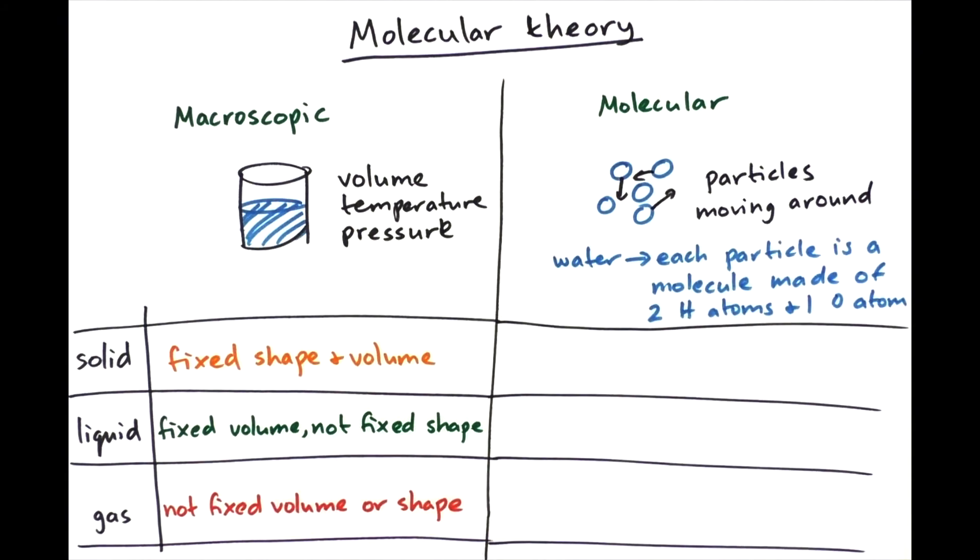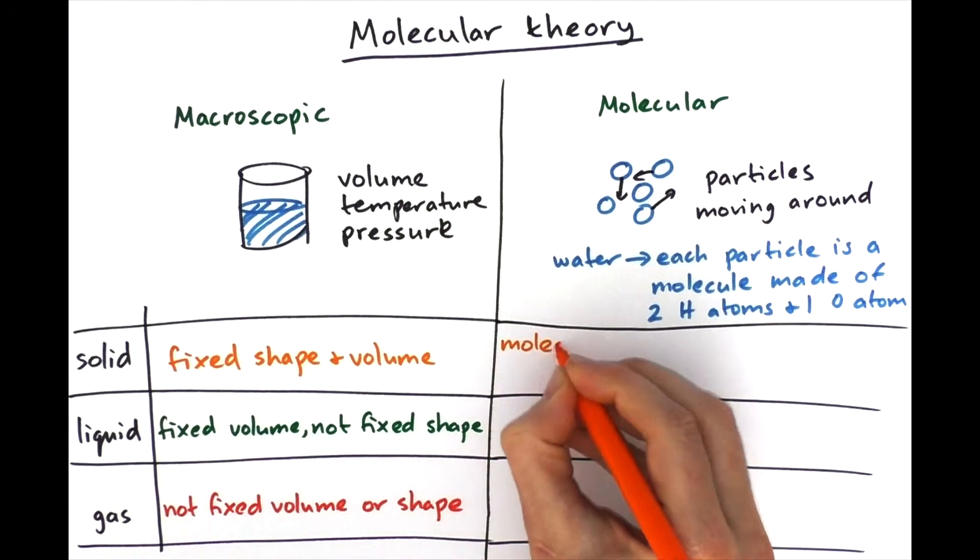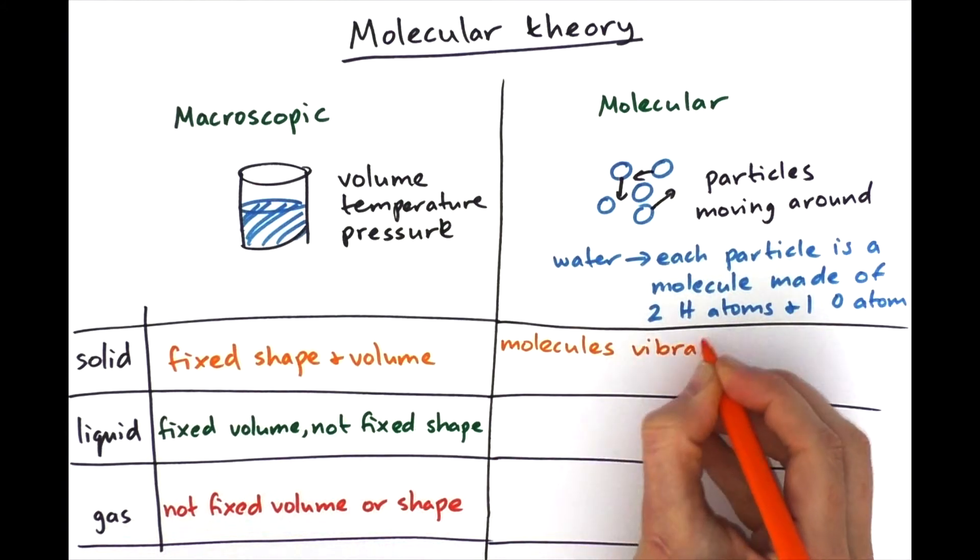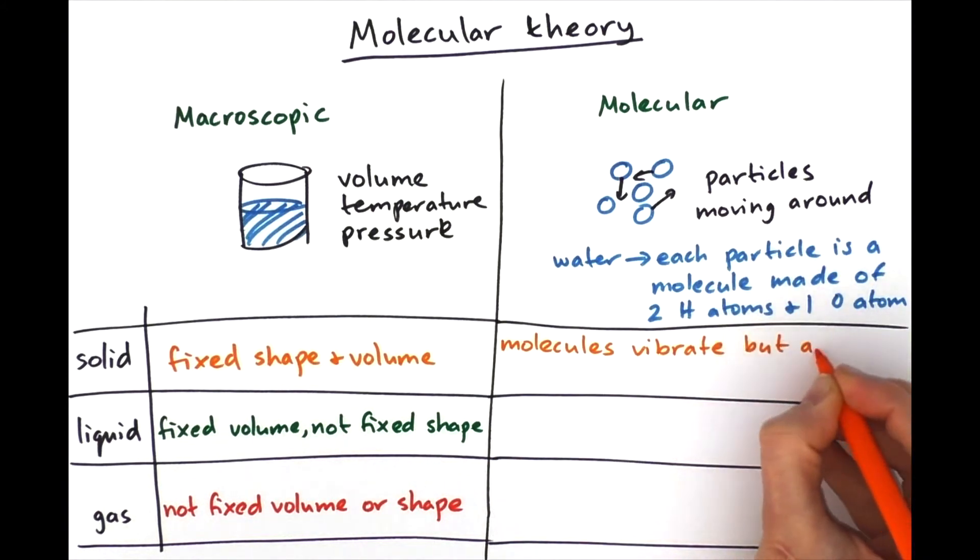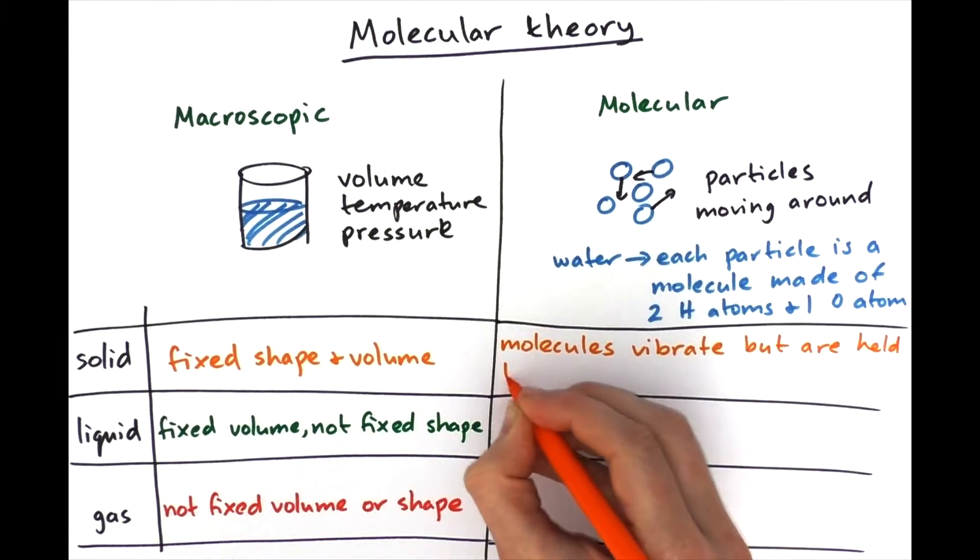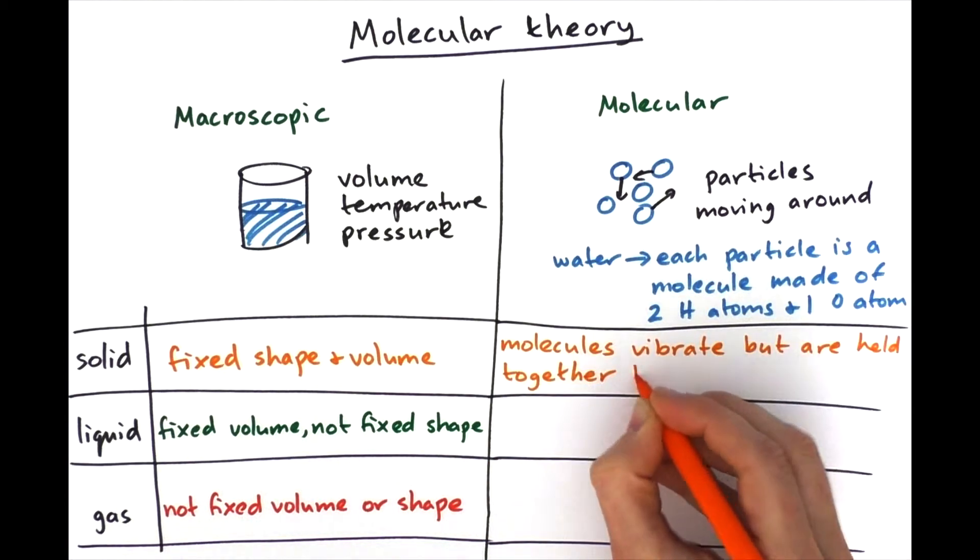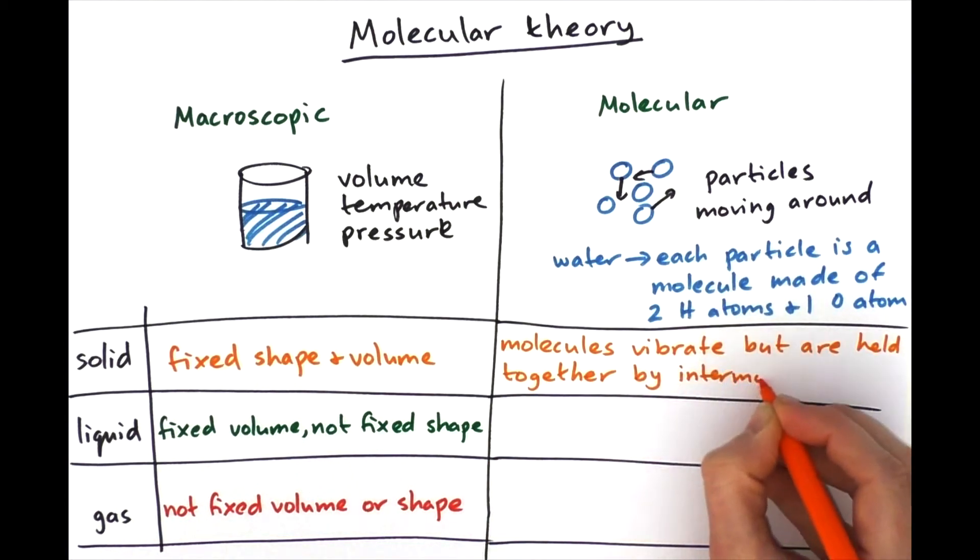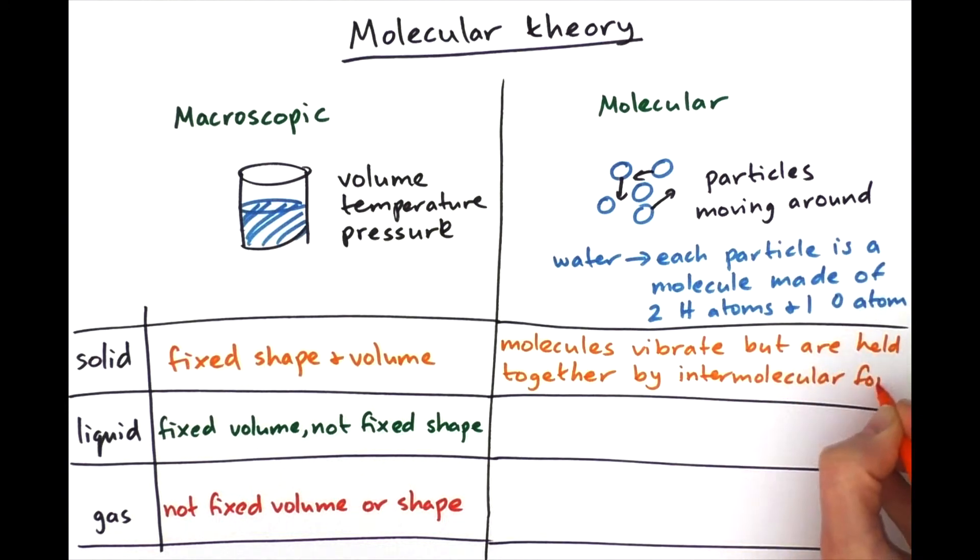So let's write down all of these things that we found about the molecular scale. So what we found for a solid was that the molecules vibrate but they are held in place by these intermolecular forces. So they can't move relative to each other. They can only vibrate.